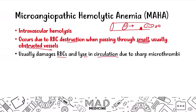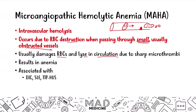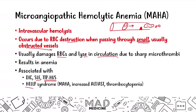This can be due to platelets and fibrin aggregates — aggregation of platelets and fibrin forms a microthrombus that cuts and destroys the red blood cell, causing anemia. MAHA is associated with conditions like DIC (disseminated intravascular coagulation), lupus, TTP, HUS, and HELLP syndrome. HELLP occurs in pregnant women and stands for Hemolysis (the H), Elevated Liver enzymes, and Low Platelets — thrombocytopenia.